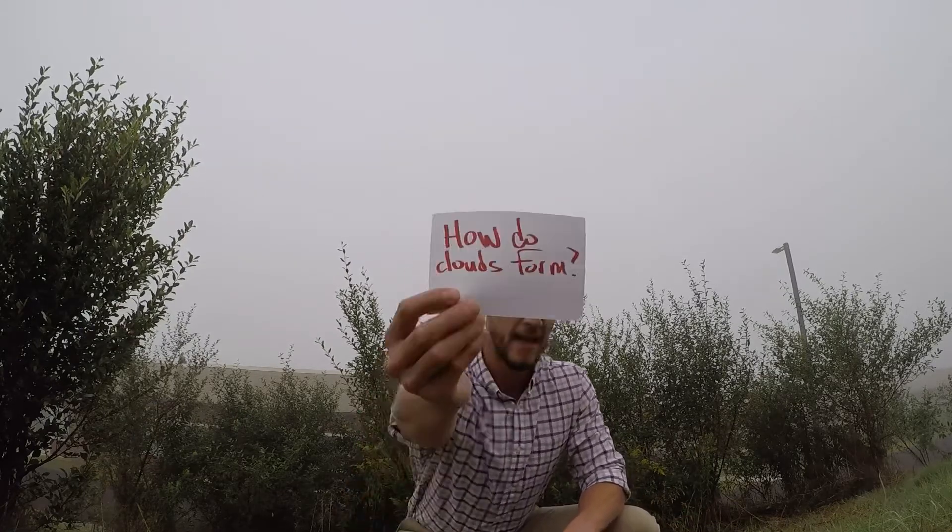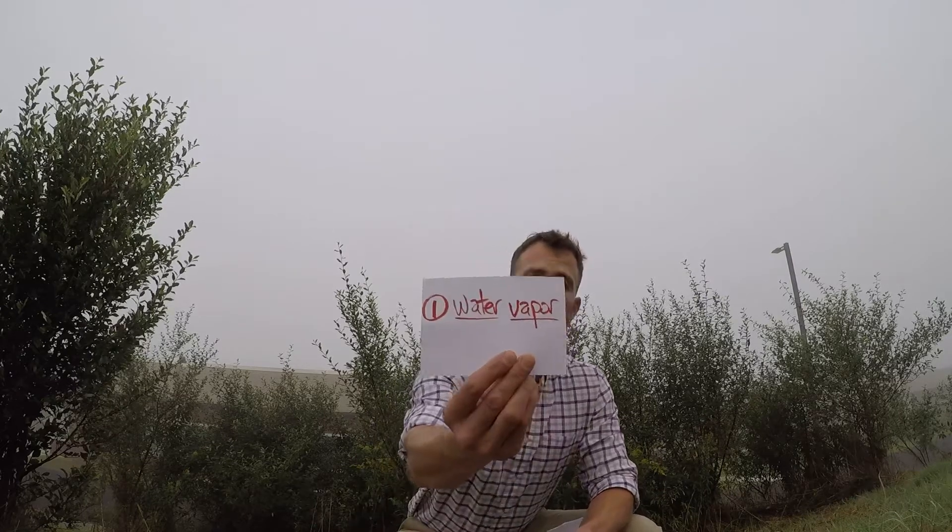So one of the things we study in earth science is how do clouds form, and there are three ingredients that make clouds form. The first thing you need is some water vapor in the air. Water vapor is something you can't see until it condenses into a cloud, which you can.